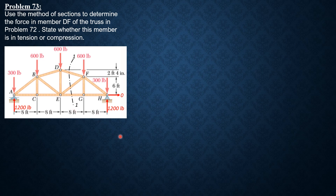Considering section 1-1, these are the members cut by this section, represented by arrows. We sum up moments about E so that the other two members are not involved in the moment equation. FDF makes an angle with the horizontal of arctan of (2 + 1/3) over 8, which equals 16.26 degrees.